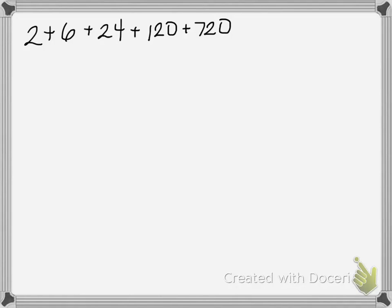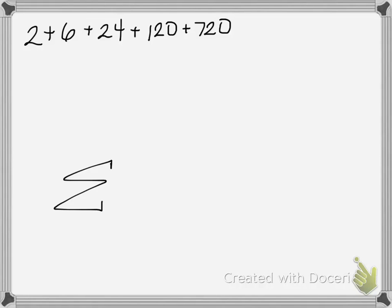Here's a series that we want to rewrite in summation notation or sigma notation. We need to begin by figuring out the general formula we'll write to the right of sigma — we've got to decide on the pattern. In this case, you're not adding a number every time, nor multiplying by the same value each time. We have 2 for my first term, and 6 is 3 times 2.